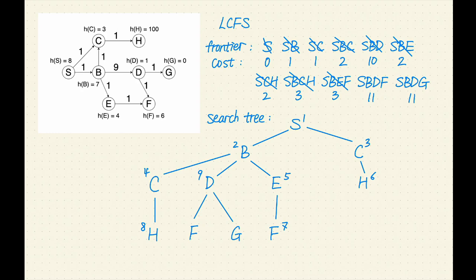Next, we'll explore all the paths with a cost of 11. SbDF and SbDG have the lowest cost of 11. Let's remove SbDF from the frontier. F is not a goal, let's expand it. F has no successor. Let's keep going. SbDG has the lowest cost of 11. Let's remove SbDG from the frontier. G is a goal. Let's return the solution SbDG with a total cost of 11.